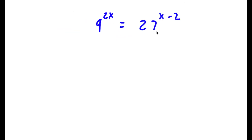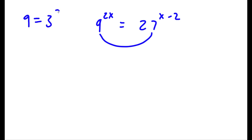So I have 9 to the power of 2x is equal to 27 to the power of x minus 2. The simplest way to solve this problem is to make both of these bases the same. Right now we have a base of 9 and a base of 27, and we want to make these two bases the same. Well, 9 and 27 are both powers of 3. So 9 is equal to 3 squared, and 27 is equal to 3 cubed, or 3 to the power of 3. So if I substitute these two values in for 9 and 27, both our bases will be 3.